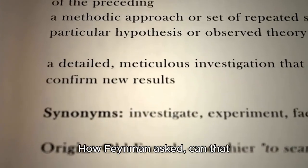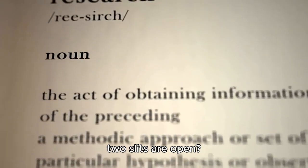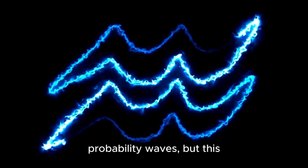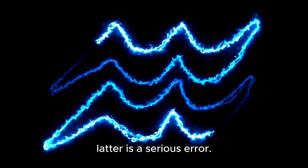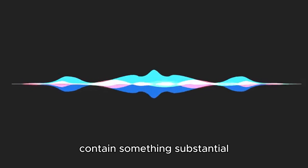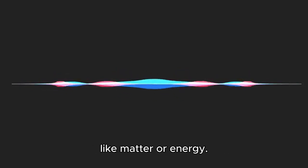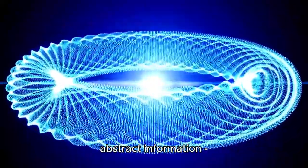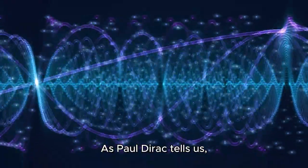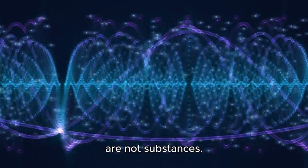How, Feynman asked, can that single particle know that two slits are open? Light waves are often compared to water waves, as are quantum probability waves. But this latter is a serious error. Water waves and light waves, as well as sound waves, contain something substantial like matter or energy. But quantum waves are just abstract information, mathematical possibilities. As Paul Dirac tells us, quantum wave functions are not substances.